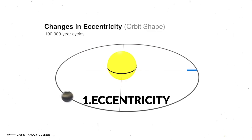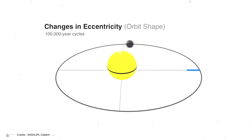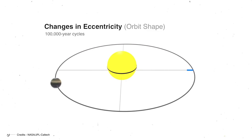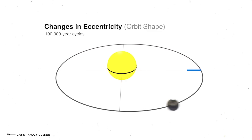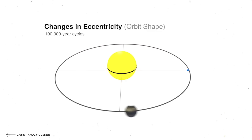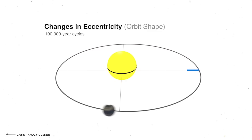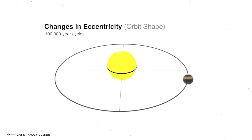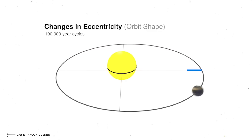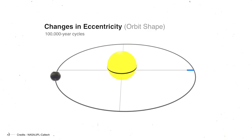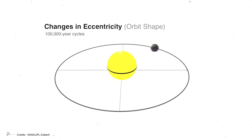1. Eccentricity. Eccentricity refers to the shape of the Earth's orbit around the Sun, which varies from being more circular to more elliptical in a cycle of about 100,000 years. While the eccentricity is high, the difference between the maximum and minimum distance from the Earth to the Sun is more significant. And when the eccentricity is low, the maximum and minimum distance from Earth to the Sun is not so great.